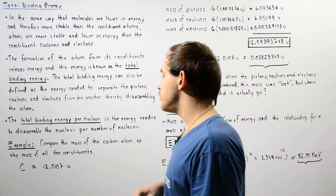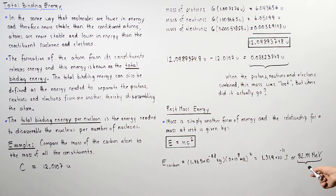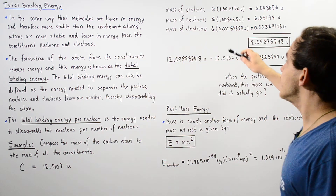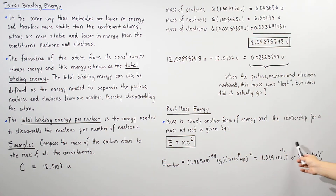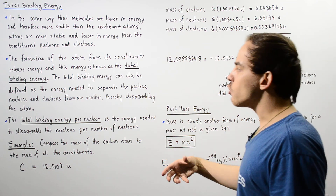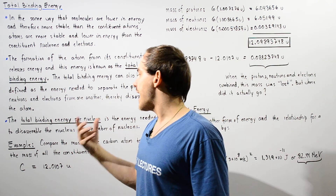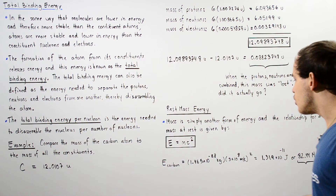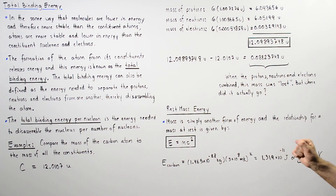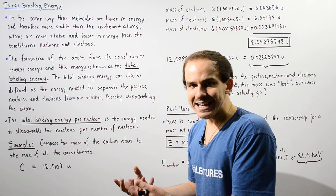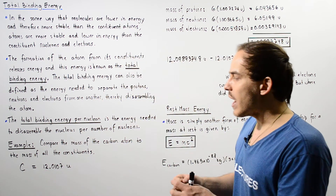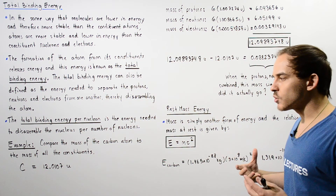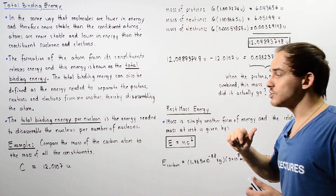To calculate the total binding energy per nucleon, we take this value and divide it by the total number of nucleons — six plus six — dividing by 12. That gives us the total binding energy per nucleon. This also gives us the energy that must be input into our carbon atom to actually separate the six protons, six neutrons, and six electrons from one another.